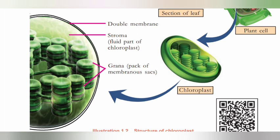Inside the stroma, it means grana. What is grana? Grana are stroma's packed membranous sacs. These sacs are arranged as stacks within the organelle. This is the main thing about chloroplast — the double membrane, the fluid stroma, and the membranous sacs called grana.